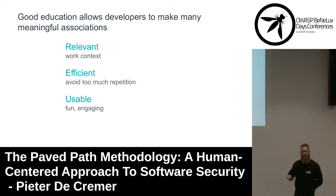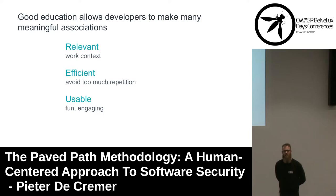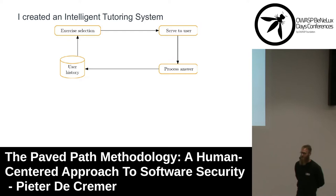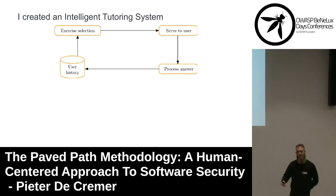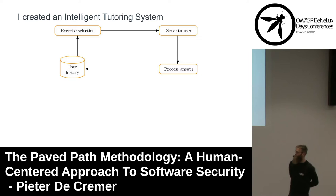So I built an intelligent tutoring system. In the main loop of this system, users are served exercises; their answers are processed before being stored in history, and this user history is used to make better exercise selection. Exercise selection I implemented as a collaborative filtering algorithm — similarly to Netflix, you find like-minded users and make recommendations based on their preferences. If some of you like and dislike the same movies as I do, your collective preferences can be used to make a recommendation for me. However, in a learning platform, there need to be some adaptations to such an algorithm.